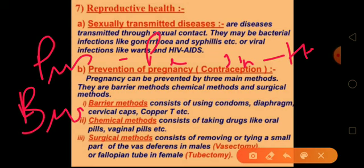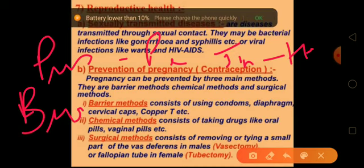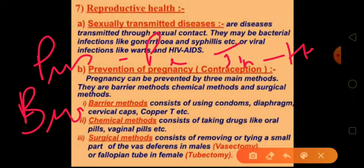The second bacterial STD is syphilis, also spread by sexual contact. The mucous membrane is affected — the oral region and rectal region are affected. The disease occurs through sexual intercourse and occasionally by kissing and close body contact. The good thing is this disease is also easily curable with antibiotics.